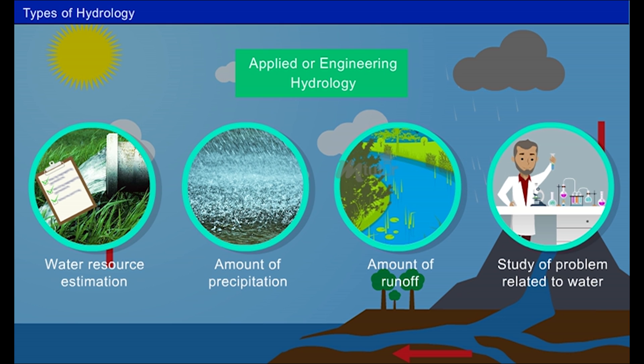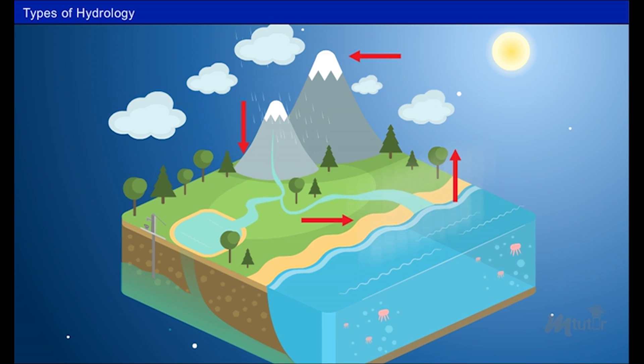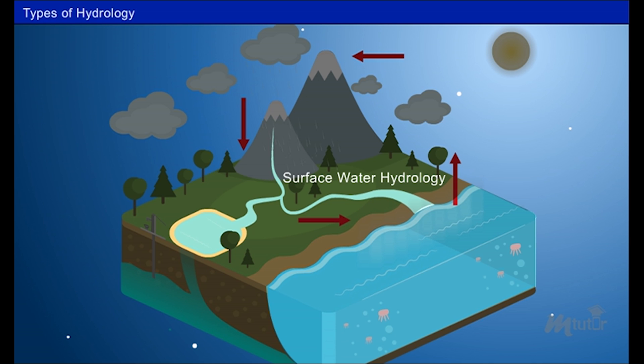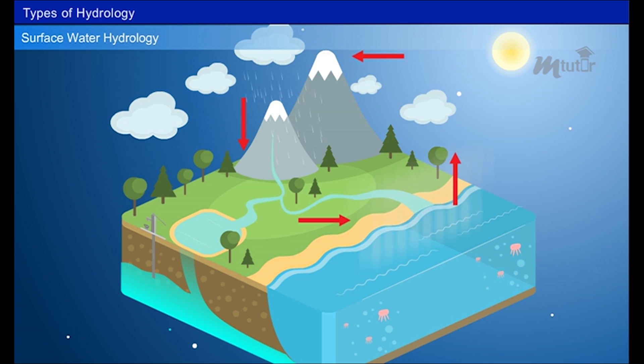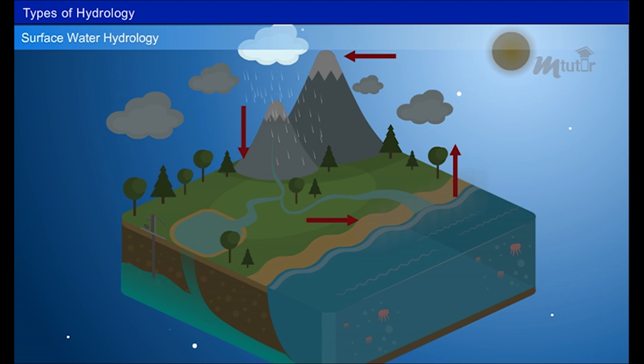Based on the distribution and circulation of water, hydrology is classified as surface water hydrology and groundwater hydrology. Surface water hydrology deals with the occurrence and distribution of water above the earth surface.